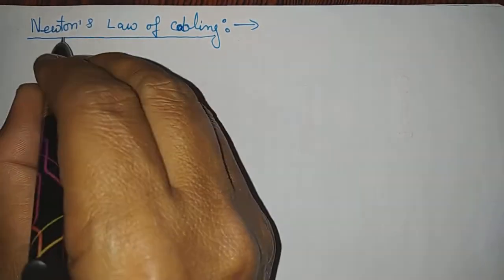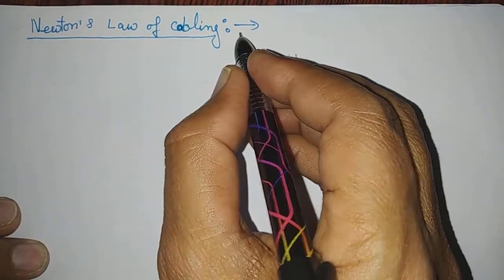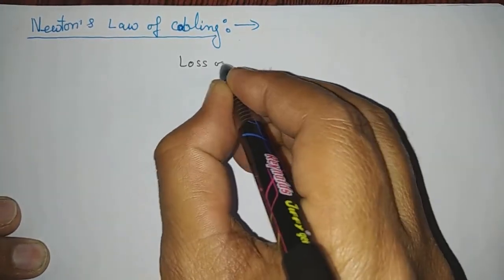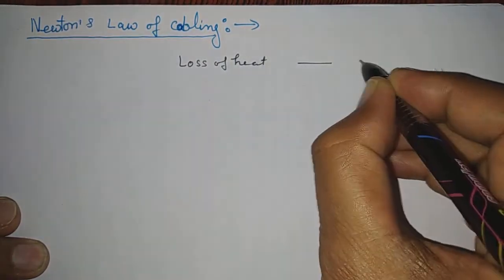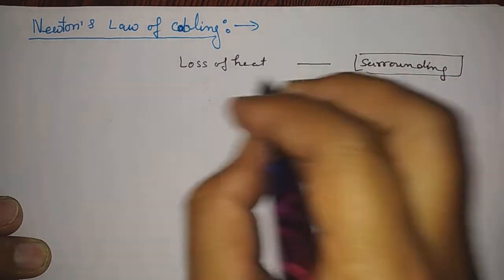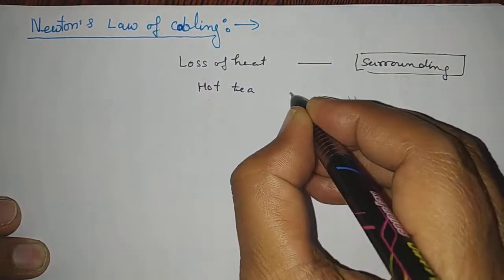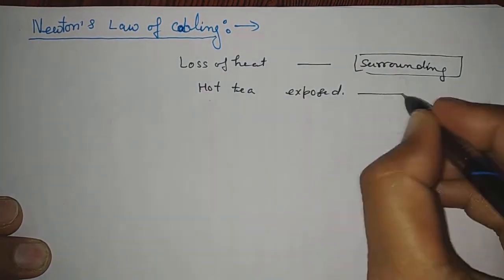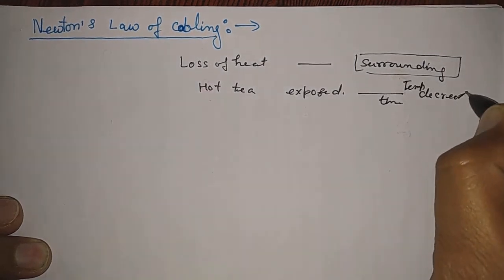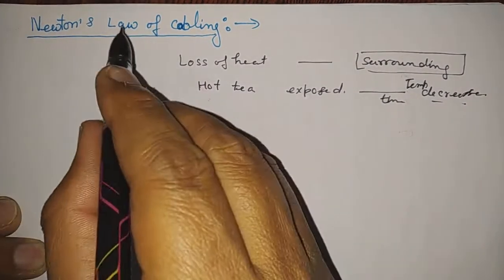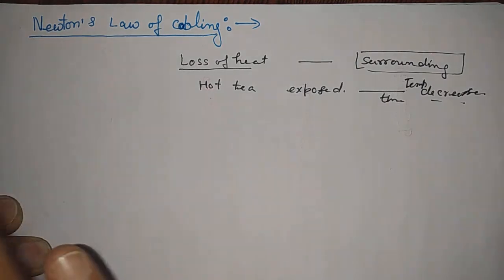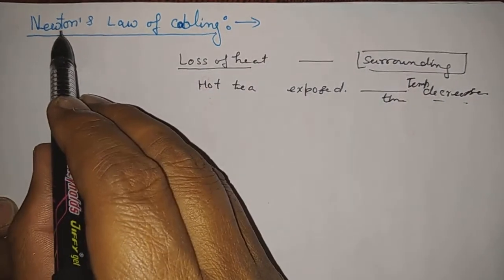Hello everyone. We are going to see the concept of Newton's law of cooling. Newton's law of cooling is related with loss of heat when a body is exposed to the surrounding. The rate of loss of heat with time — how it decreases — we will study here in Newton's law of cooling.